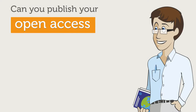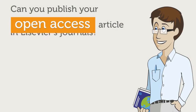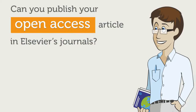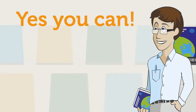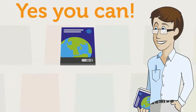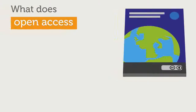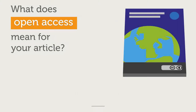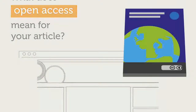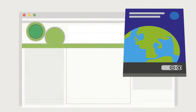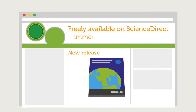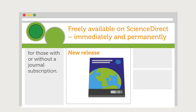Can you publish your open access article in Elsevier's journals? Yes, you can. What does open access mean for your article? It means your article will be made freely available immediately and permanently on ScienceDirect for those with or without a journal subscription.